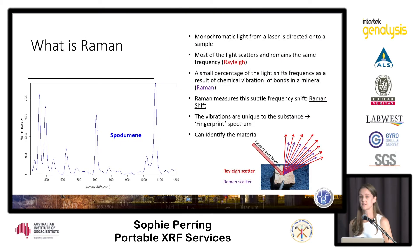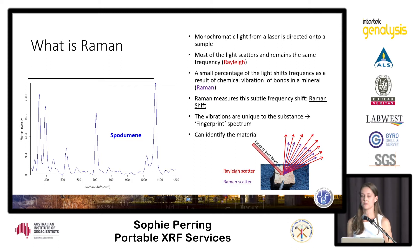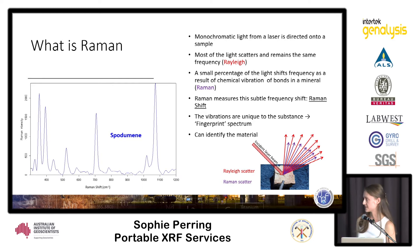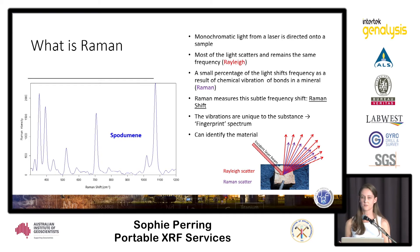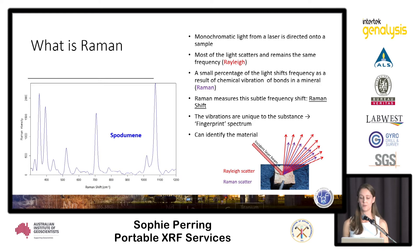To give you some theory behind this technique: Raman works via a monochromatic laser being directed at a sample, where a very small percentage of this light is involved in the chemical vibrations of your mineral. During this process the energy or frequency of that light will be shifted, and this is what is then measured on your scale. As you can see by the spectrum, we measure Raman shift — the change in energy or frequency from that original incident laser. Due to the unique nature of your minerals, this gives you a fingerprint spectrum via which you can perform mineral identification.